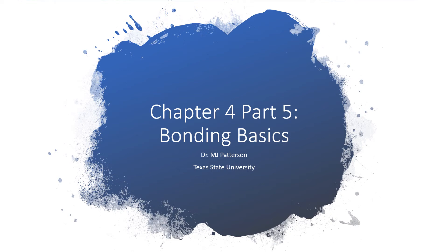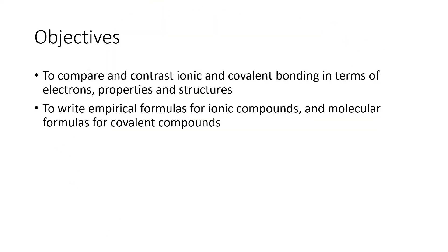Hi, Bobcats. This video looks at some of the basic aspects of ionic and covalent bonding. Our objectives are to compare and contrast ionic and covalent bonding in terms of the electrons, the properties, and the structures of the substances, and also to show that for ionic compounds we will write empirical formulas, but for molecular compounds we are going to write molecular formulas.